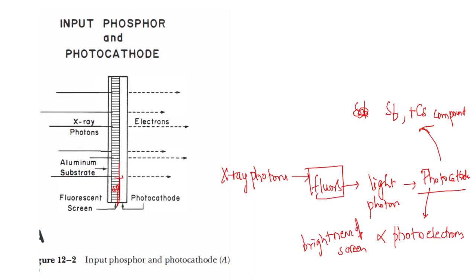The photocathode is directly applied to the CsI input phosphor, so light from the CsI directly passes into the photocathode. In the past, there used to be a transparent barrier between the fluorescent screen and the photocathode, but now there is no transparent barrier — there is direct passage of light from the fluorescent screen to the photocathode.